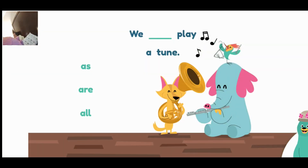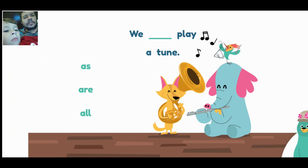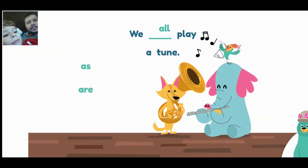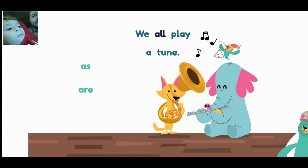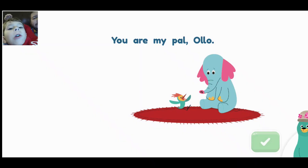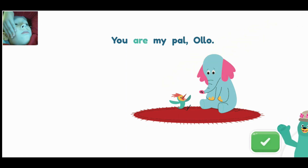Drag the word all to finish the sentence. We all play a tune. As. Are. All. We all play a tune. All. You made the sentence: we all play a tune. Super! Tap the word are in the sentence: you are my pal. Tap the word are. Great! That's the word are.